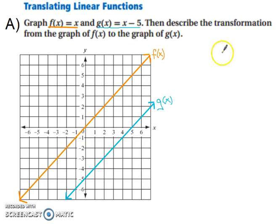So now if we look at the transformation, it looks like the graph shifted down 5 units. So it was a translation down 5 units.